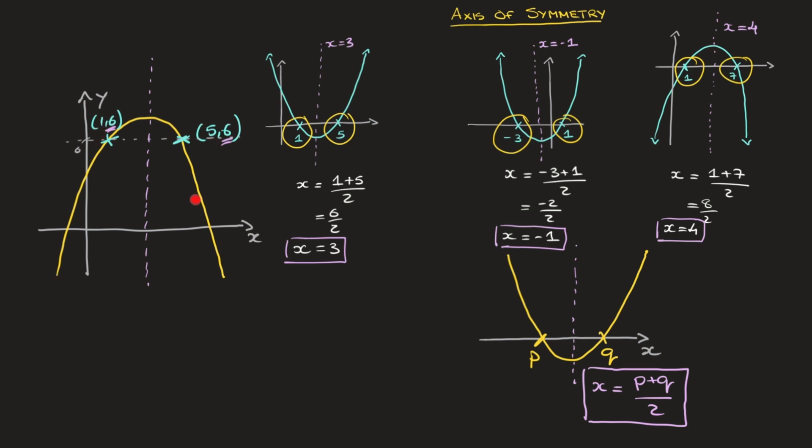For this parabola, the equation of its axis of symmetry is x = (1 + 5)/2, which equals 6/2. Finally, x = 3. I can label that on my graph as x = 3.